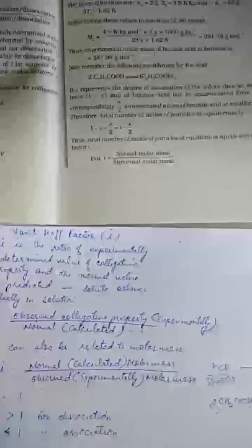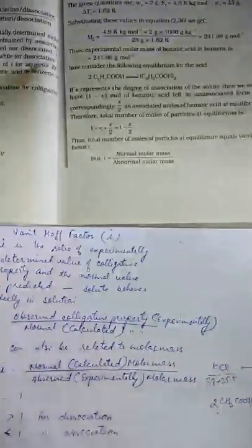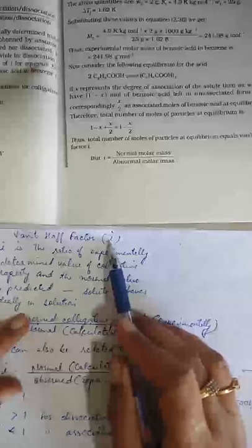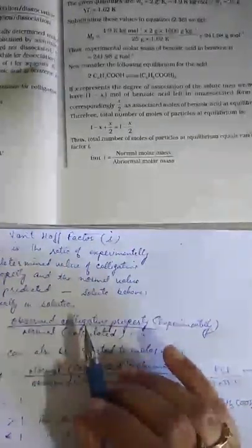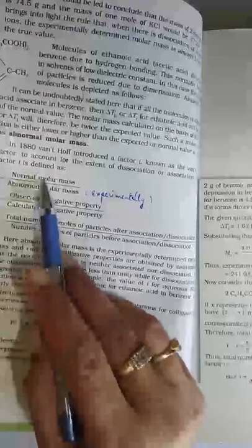We have to start with the Van't Hoff vector. Van't Hoff, in 1880, introduced a vector known as Van't Hoff factor i. It is the ratio of experimentally observed colligative property to the calculated colligative property, or normal colligative property. It can also be related to molar mass: normal molar mass to the abnormal molar mass, that is experimentally observed molar mass. So, observed colligative property divided by calculated colligative property, or normal molar mass upon the observed molar mass.